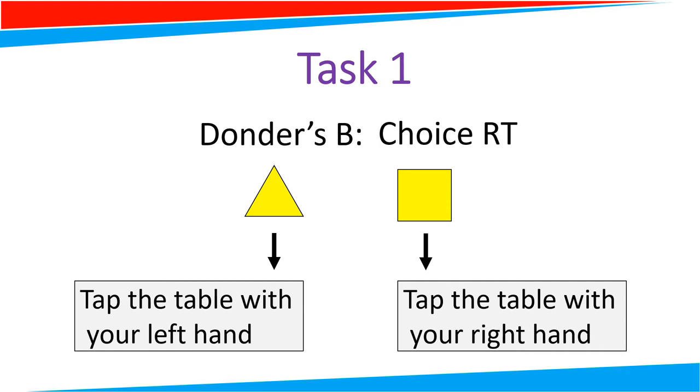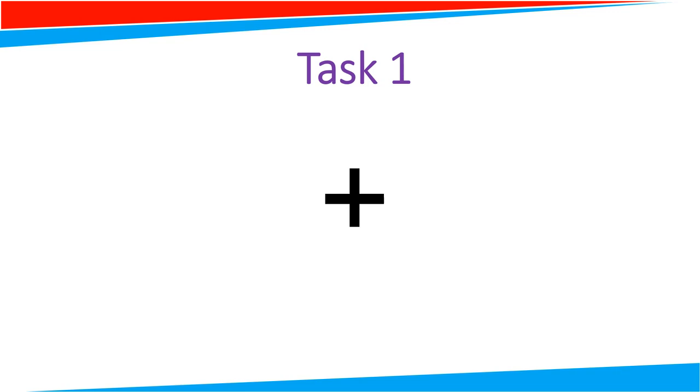But an alternative can also be a new stimulus, which is a square, and the different response that needs to be done when seeing the square shape is to tap the table, not with your left hand, but with your right hand. So now you need to still react as quickly as you can. If you see the yellow triangle, tap with your left hand. If you see the yellow square, tap the table with your right hand.